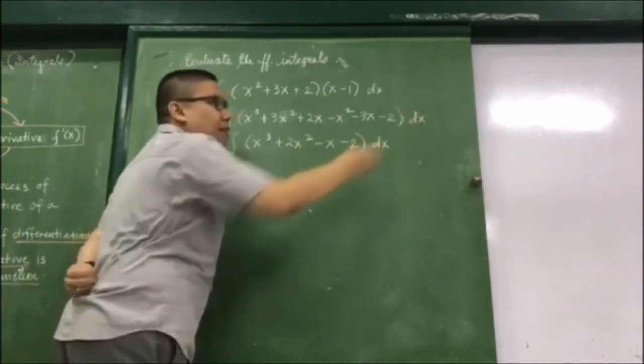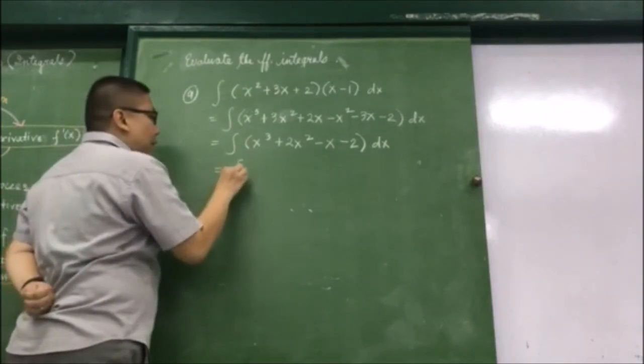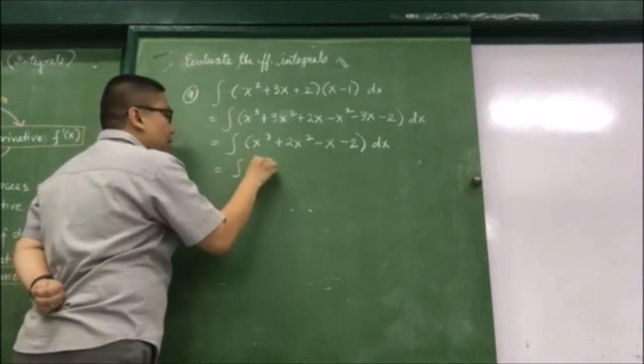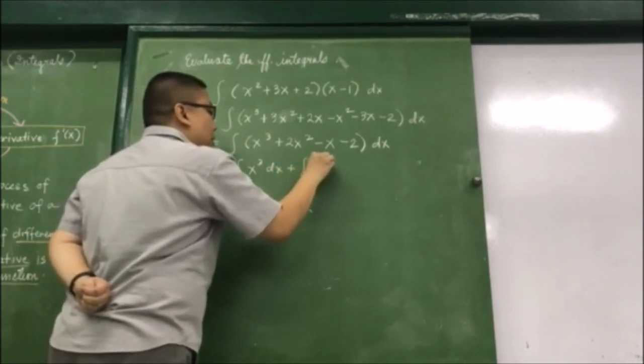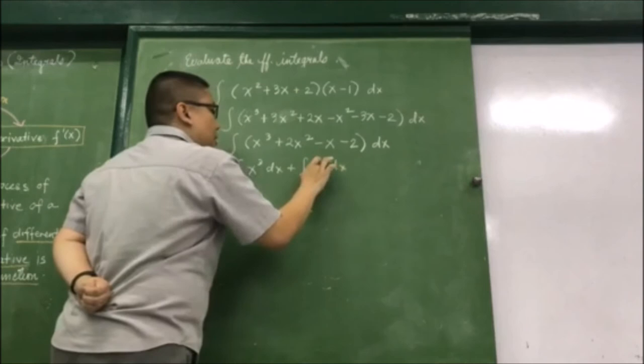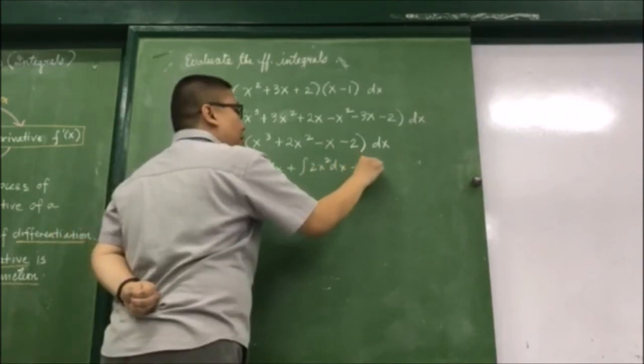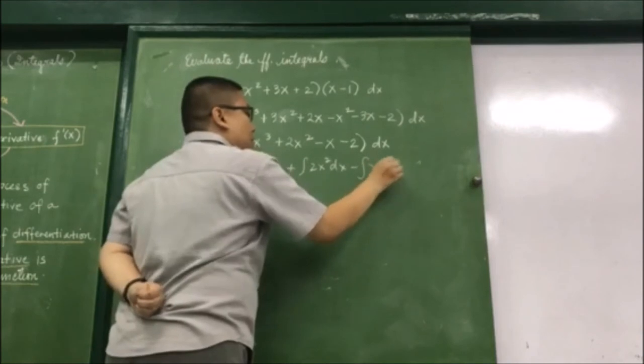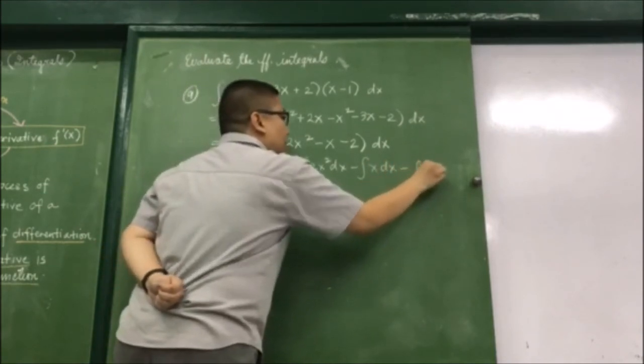Let us now apply directly the antiderivative sum and difference formulas. So in this case, we have the integral of x cubed dx, and then plus the integral of 2x squared dx, and then minus the integral of x dx, and then minus the integral of 2 dx.